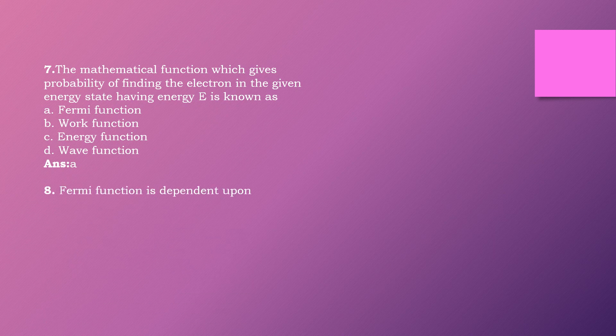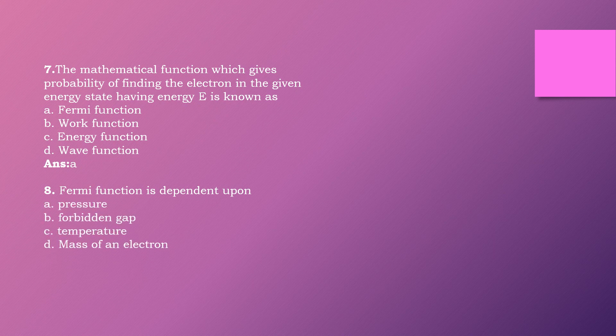Question eight: The Fermi function depends upon dash. Options are: pressure, forbidden gap, temperature, mass of the electron. The right answer is option C: temperature. So, Fermi function depends upon temperature.